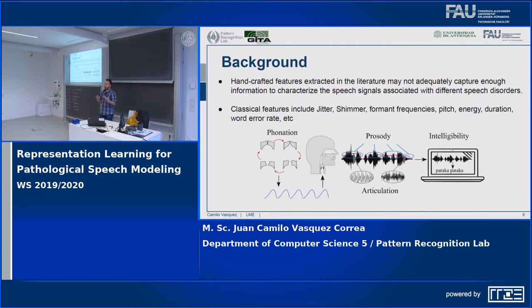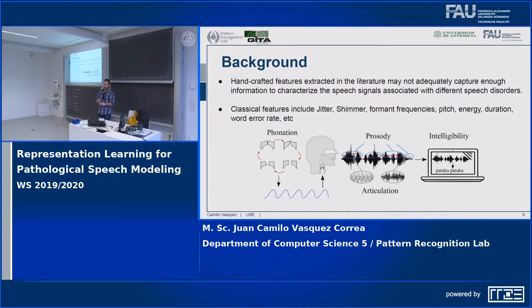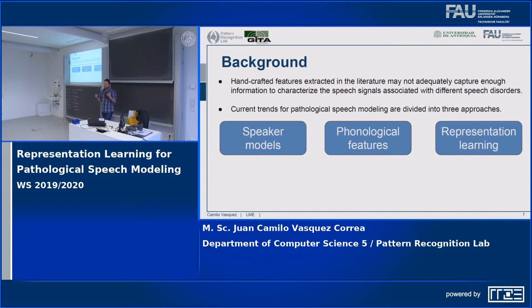My main concern is that clinical handcrafted features extracted in related studies may not capture enough information to characterize pathological disorders affecting different aspects of the speech production system. Classical features addressed in the literature include phonation measures regarding perturbation of vocal fold vibration, articulation measures regarding formant frequencies and resonances in the vocal tract, prosody features regarding fundamental frequency, energy, and speech rate, and intelligibility measures based on word rate.